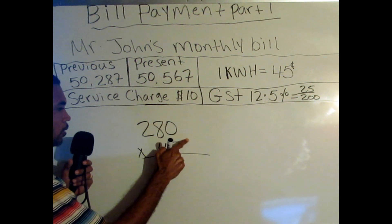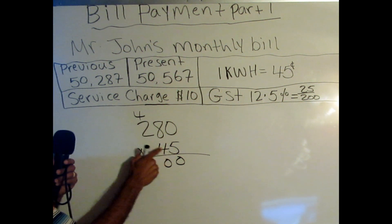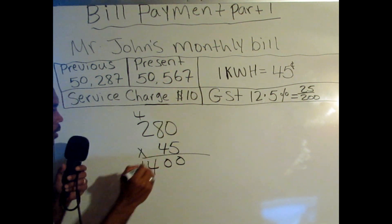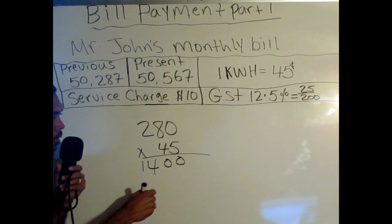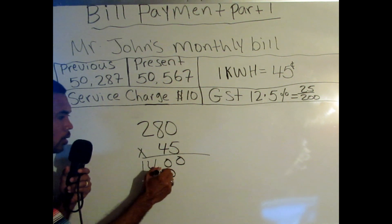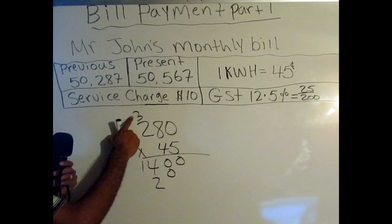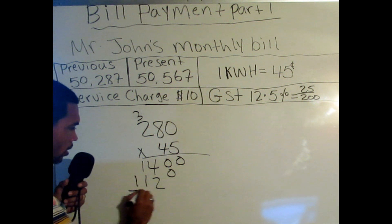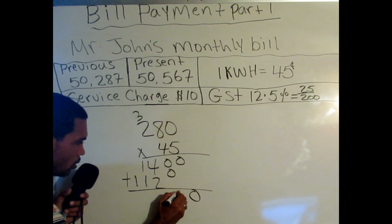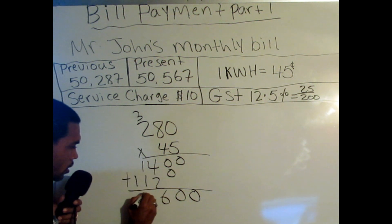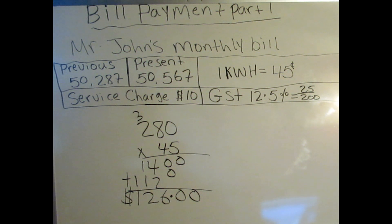So we multiply 280 by 45 cents. Five times zero is zero. Eight times five is 40 — bring on a zero, carry the four. Five times two is 10, plus four is 14. Then for the tens: four times zero is zero. Eight times four is 32 — bring on a two, carry the three. Four times two is eight, plus three is 11. Adding the partial products: zero, zero plus zero is zero, four plus two is six, one plus one is two, bring down the one, add the decimal. Mr. John's bill so far is $126.